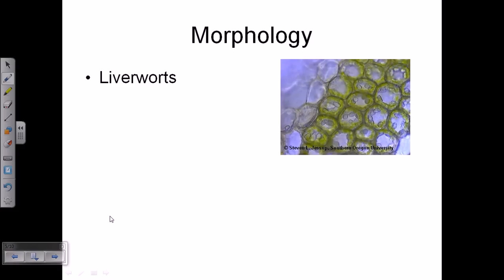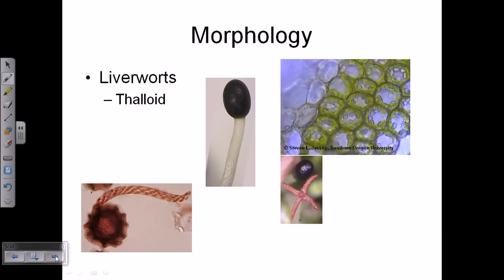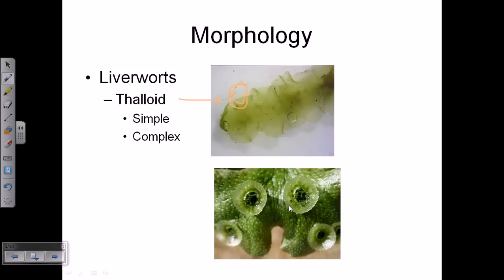Now let us talk about liverworts. They have a slightly more complex structure than mosses. Looking at the liverwort structure, we have a spore-bearing sac — this is the sporophyte part — and this sac can burst open so spores can come out. These structures are called thalloids. The thalloids are filled with spores; when they need to release spores, they just burst the thalloid. Some liverworts have very simple thalloids and some have very complex, organized thalloids.